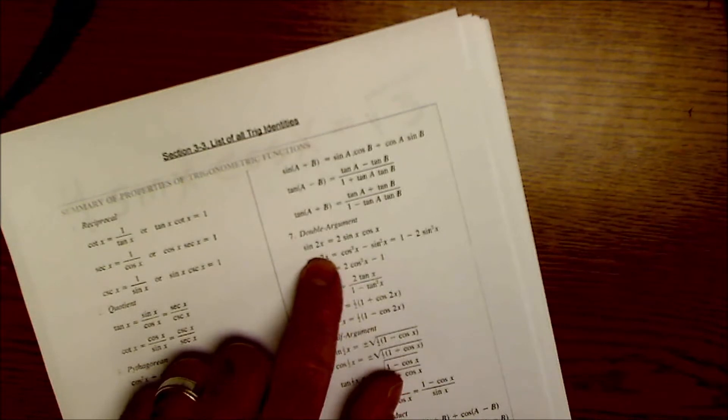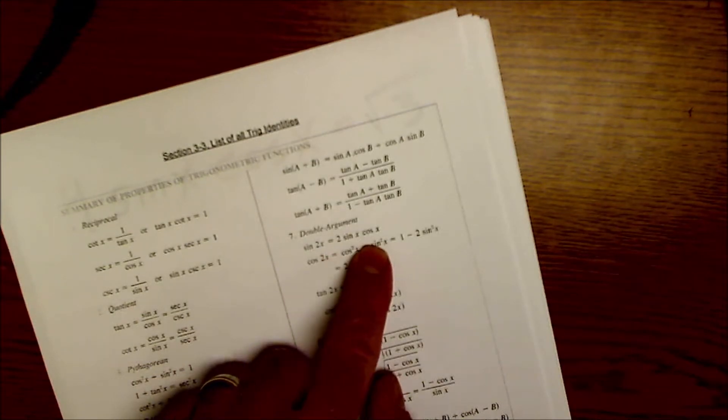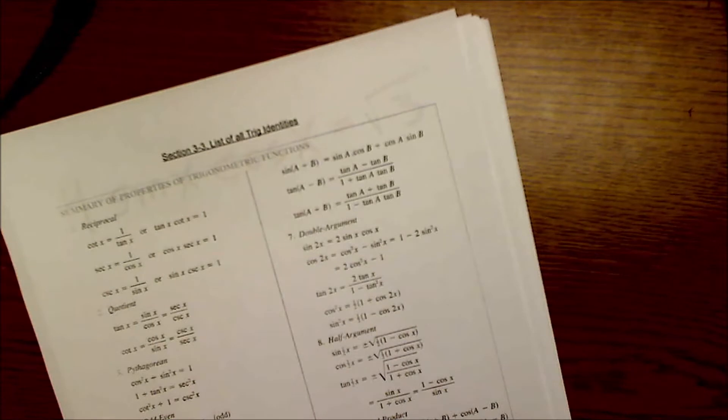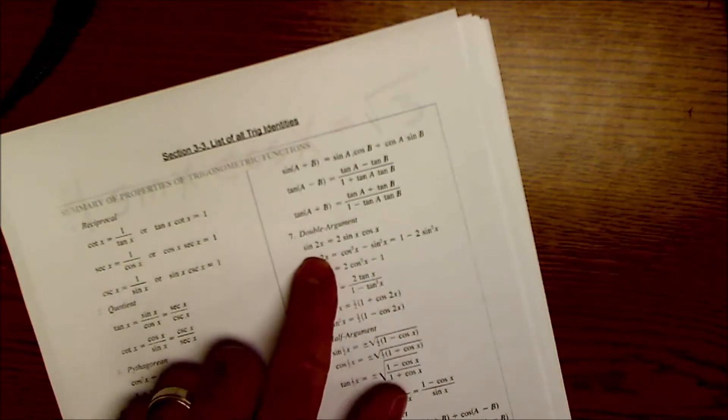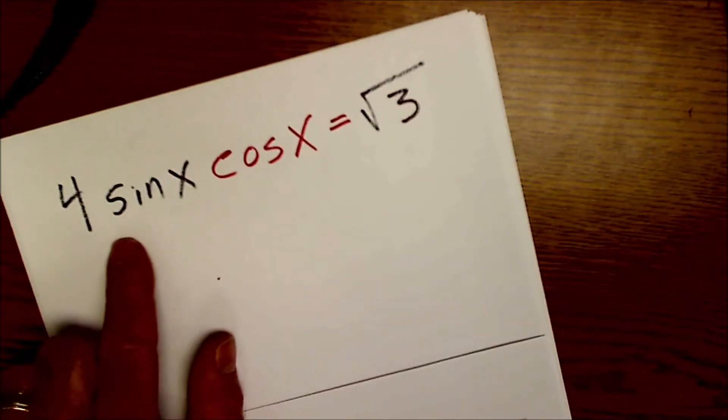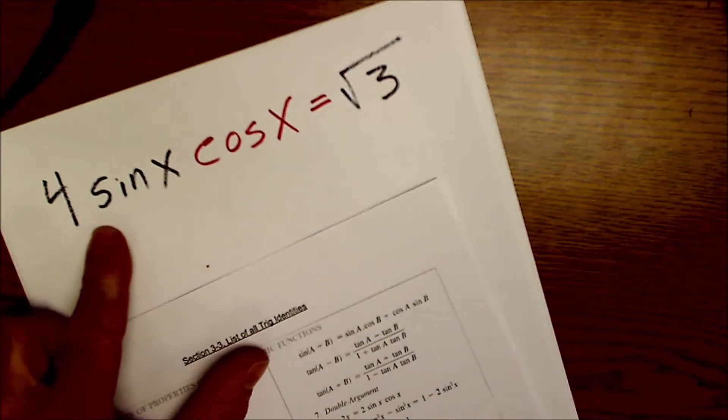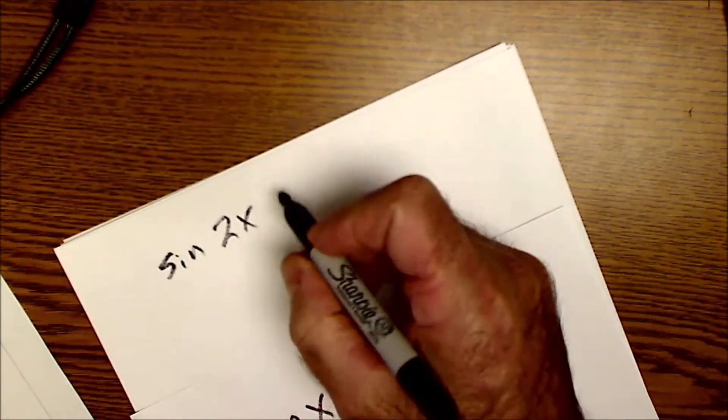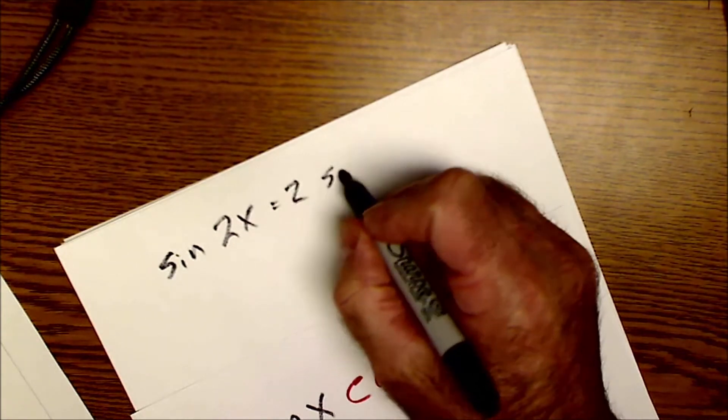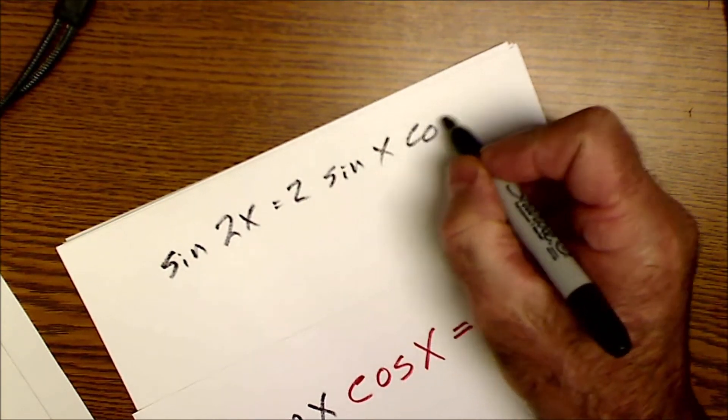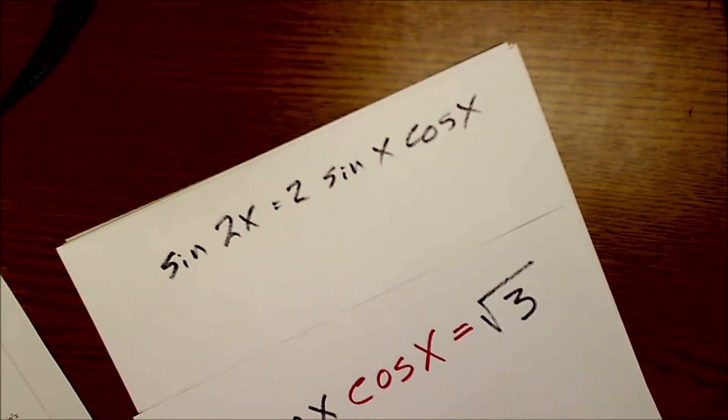Sine of 2x is equal to 2 sine of x cosine of x. So if I'm looking at all my trig identities I can see that sine of 2x is kind of looking like this right here. Sine of 2x equals 2 sine of x cosine of x. So that's a double argument identity.